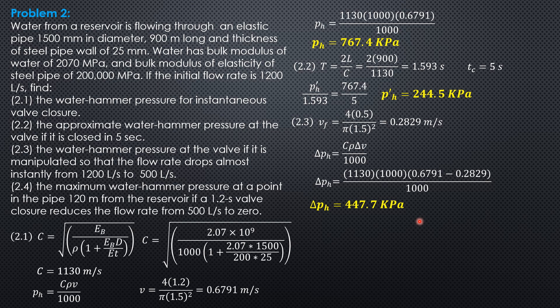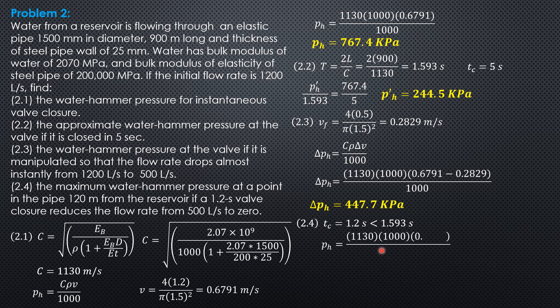For Part D, find the maximum water hammer pressure at a point 120 meters from the reservoir, given a 1.2-second valve closure reducing flow from 500 L/s to zero. First solve for pH: actual closure time 1.2 seconds is less than 1.593 seconds, so this is sudden closure. For sudden closure, pH = C × ρ × V / 1,000. Velocity is 0.2829 m/s when discharge is 500 liters per second, and final velocity is zero. So pH = 319.7 kilopascals.